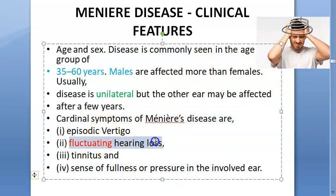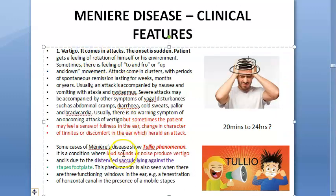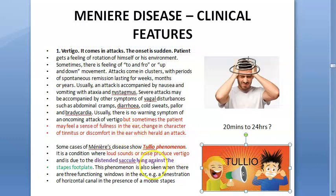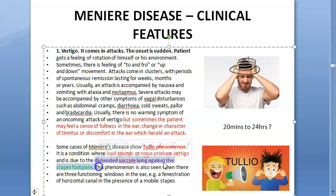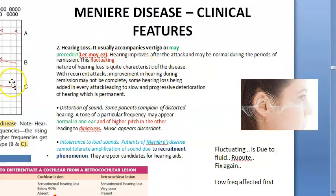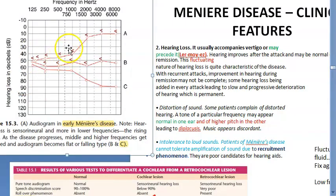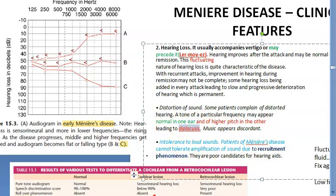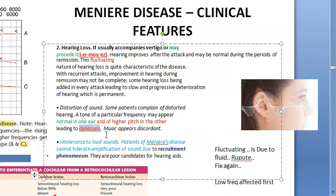The cardinal symptoms are episodic vertigo, fluctuating hearing loss, tinnitus, and a sense of fullness or pressure in the affected ear. Loud noise can also trigger vertigo because the saccule lies close to the stapes footplate — this is called Tullio's phenomenon. Hearing loss initially shows a rising curve with low frequencies affected first; later high frequencies are affected giving a falling curve. Recruitment is present, and diplacusis can occur — the affected ear perceives a higher pitch.